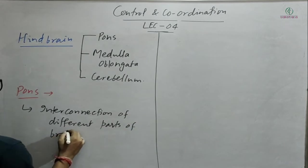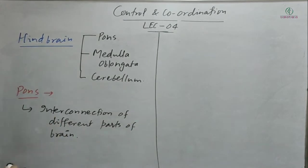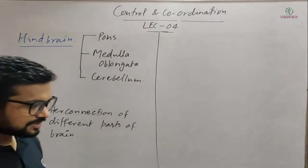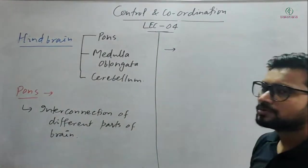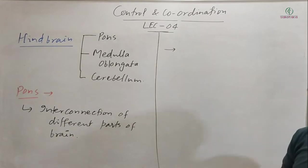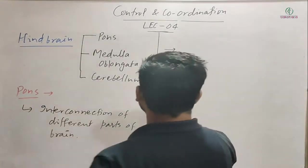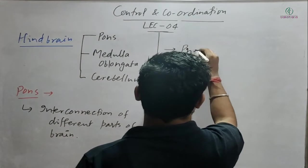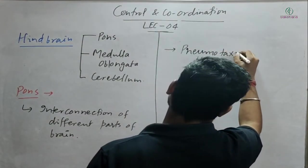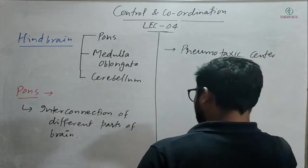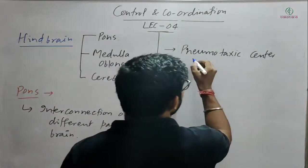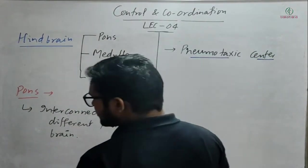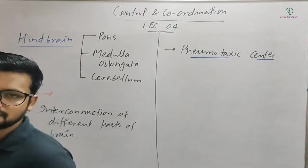Pons performs interconnection of different parts of the brain. This is the function of pons. In addition, inside pons there is a special center called the pneumotaxic center.